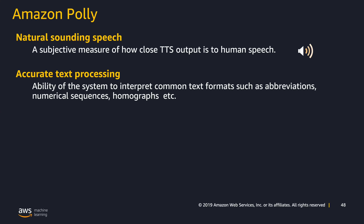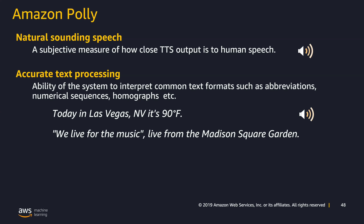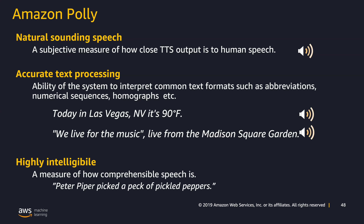Essentially, it's natural-sounding speech with Amazon Polly. It's also really accurate — for example, it understands the sentence 'Today in Las Vegas, NV it is 90 degrees Fahrenheit' and pronounces it properly. You don't need any machine learning expertise to take advantage of it.